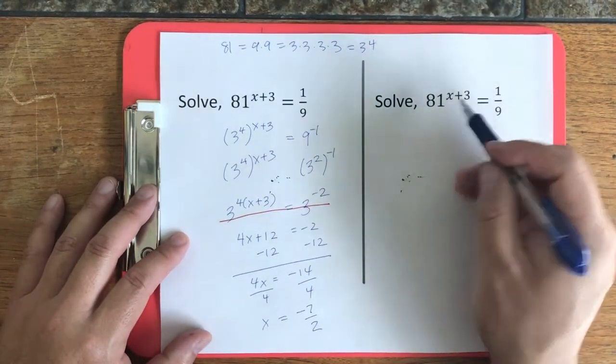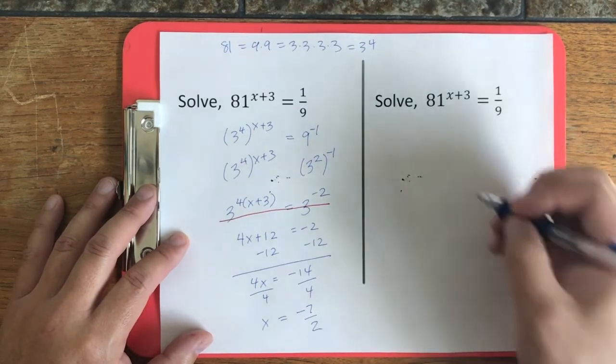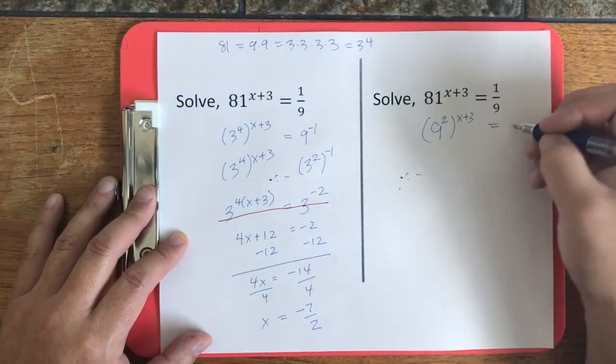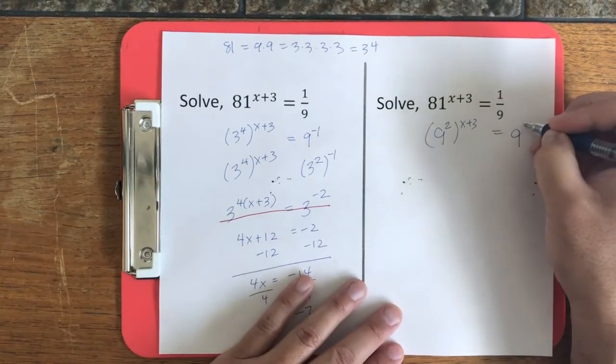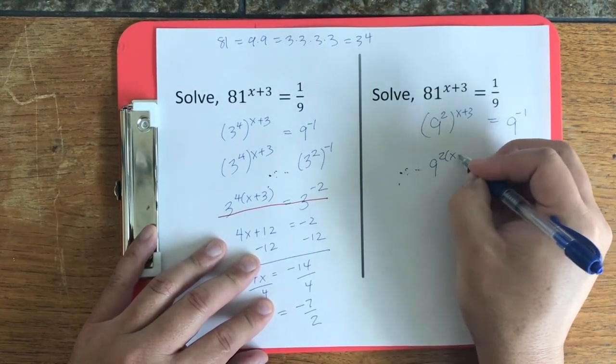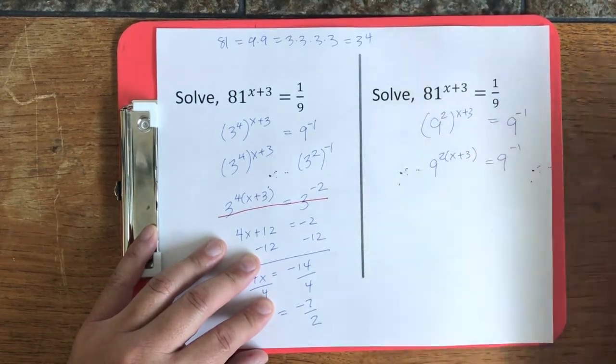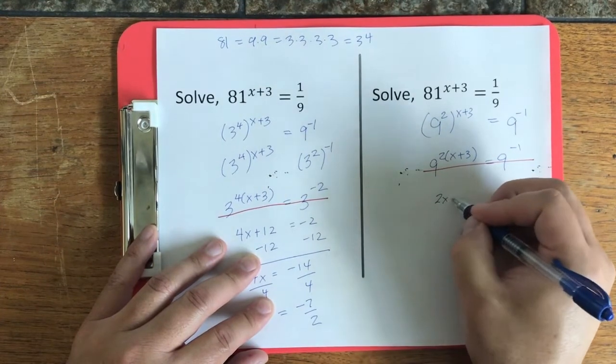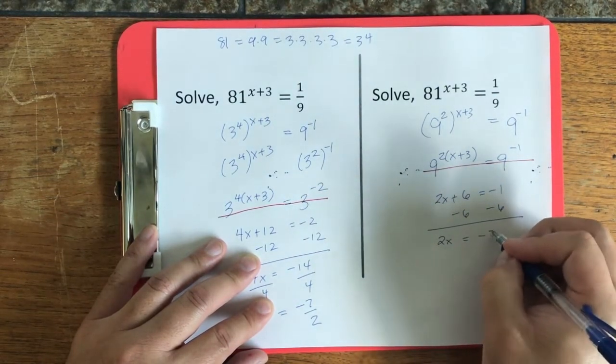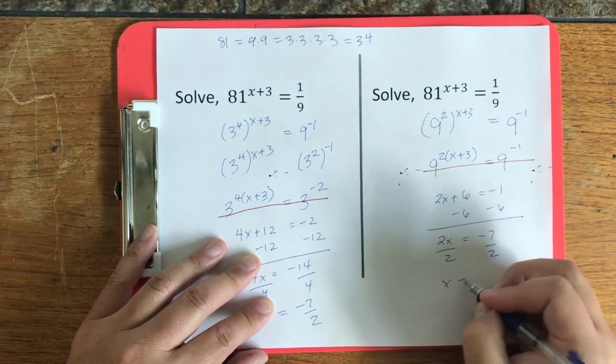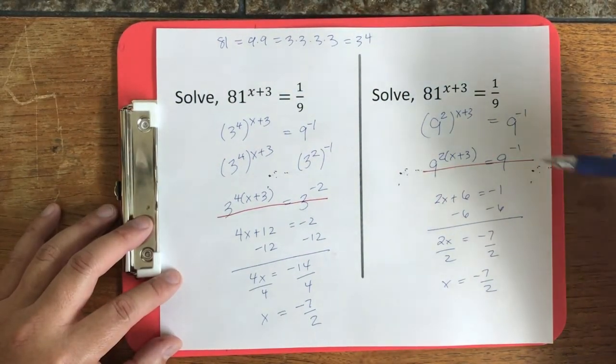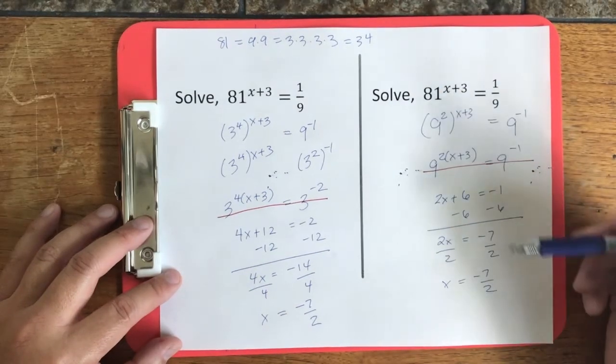Now, in this problem, it's the exact same problem here, we're going to try using a base of 9. So in this case, we're going to use 9 squared. And then we'll bring that 9 up by using a negative 1 exponent. So again, we will multiply these two exponents. And then we'll cancel out the 9s. We'll bring the 6 over. And then we'll divide both sides by 2. So the moral of the story is, as long as the bases match, you'll get the same answer. But if you use a larger matching base, you'll do a little less work.